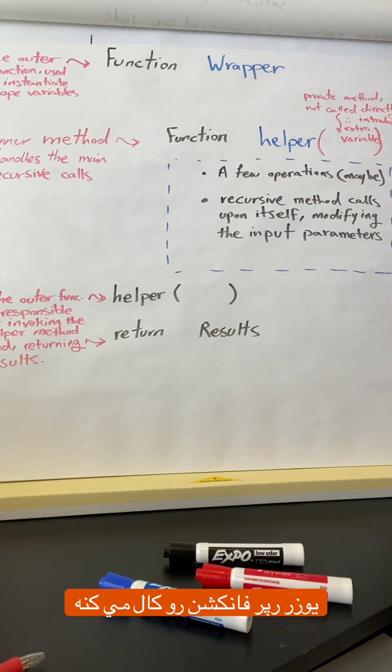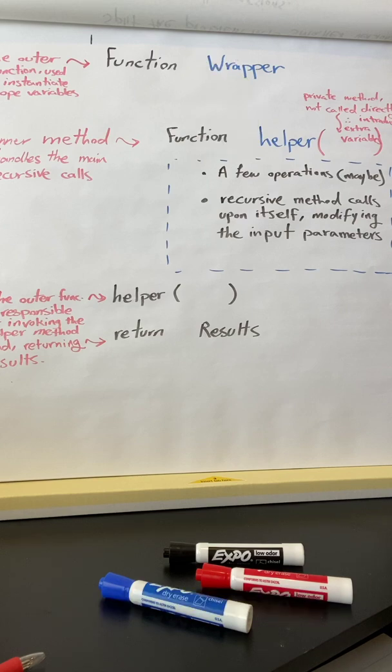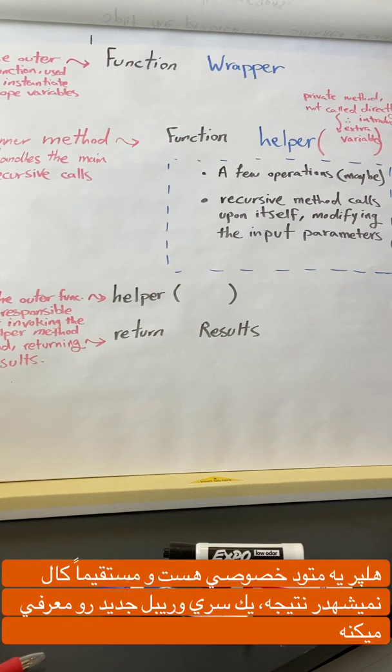So which one of these functions is going to be called by the user? That is the wrapper function. Helper is just a private method and it's not directly called.